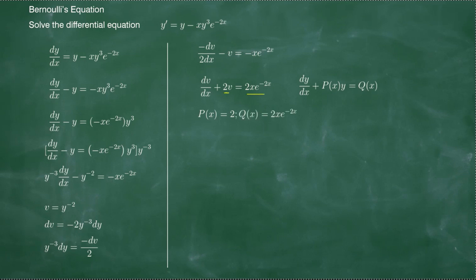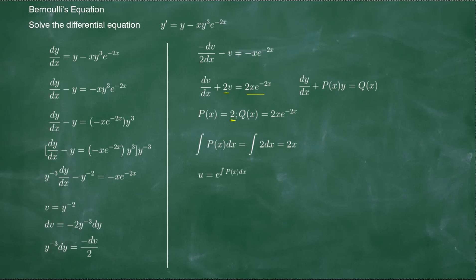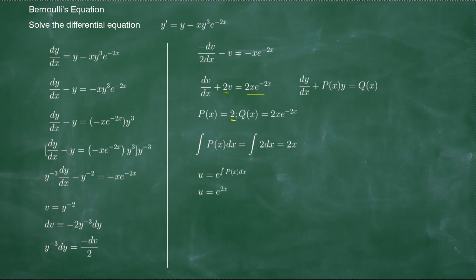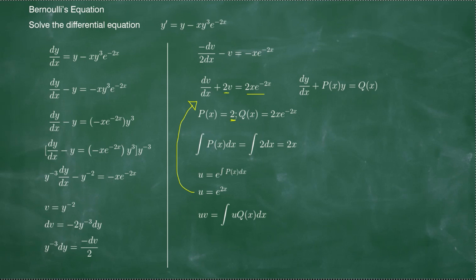We solve for the integral of p(x) dx, which is the integral of 2 dx, equal to 2x. The integrating factor is therefore e to the integral of p(x) dx, which gives us an integrating factor of e to the 2x. We then multiply this to the standard form using the formula: the integrating factor u times the dependent variable v equals the integral of u times q(x) dx.